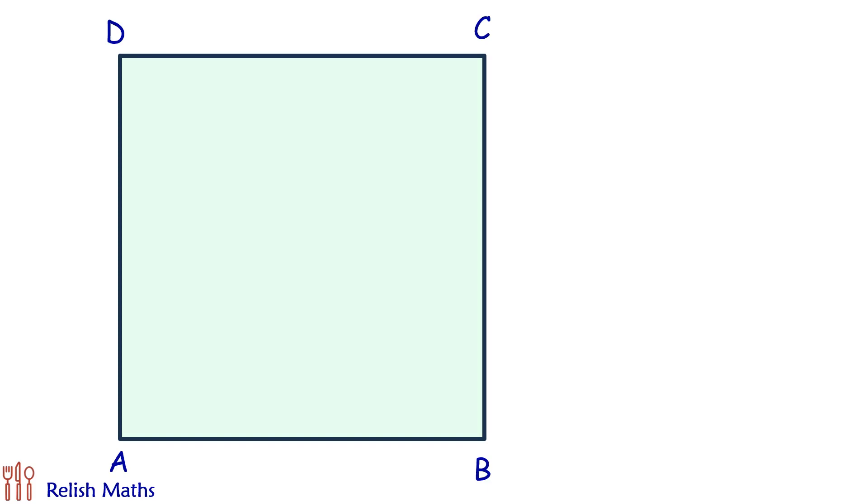In today's question, given is ABCD is a square and inscribed in it is a quadrilateral PQRS.